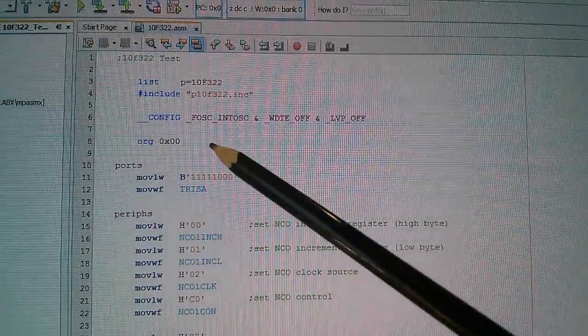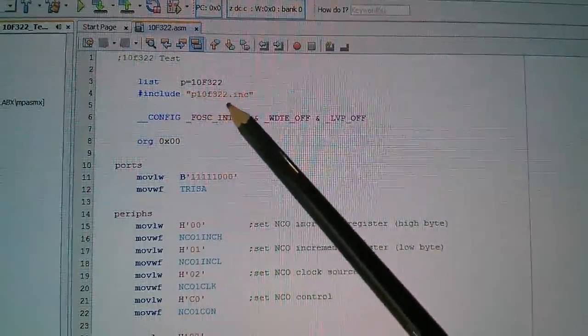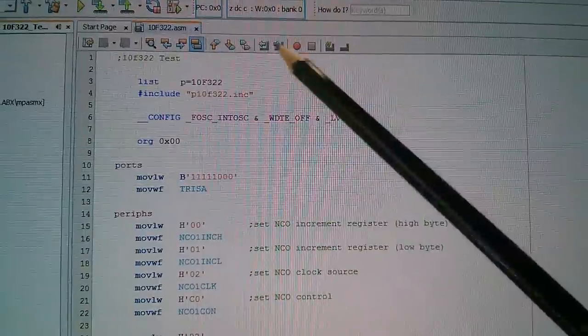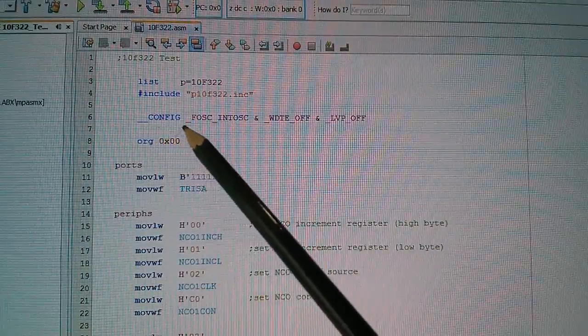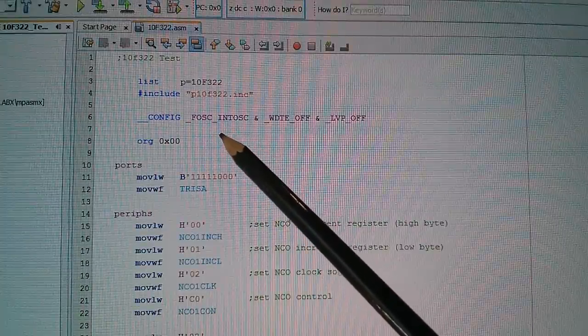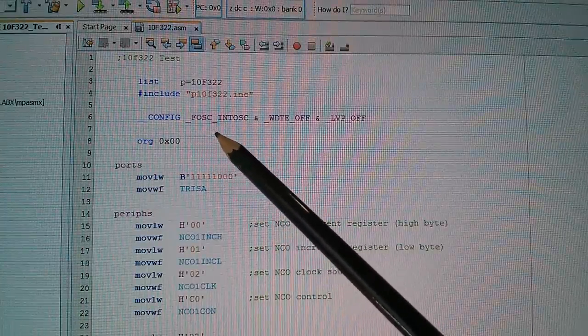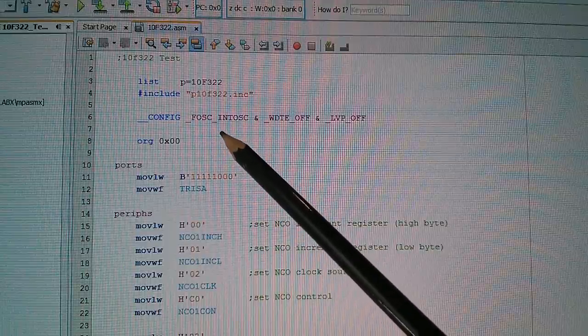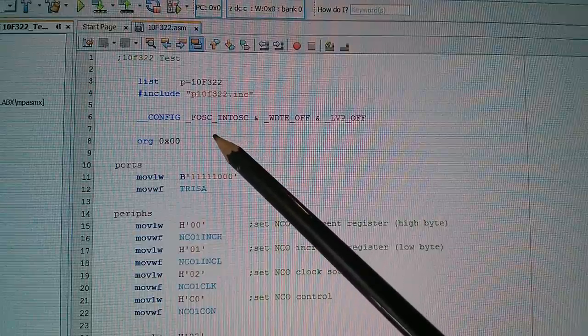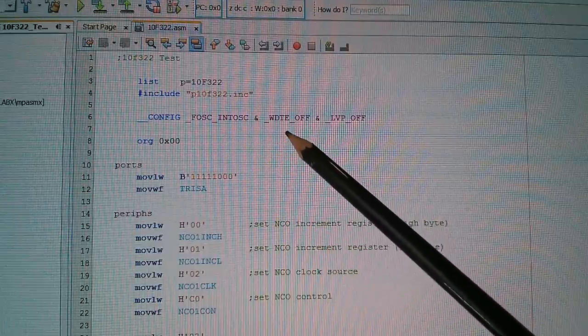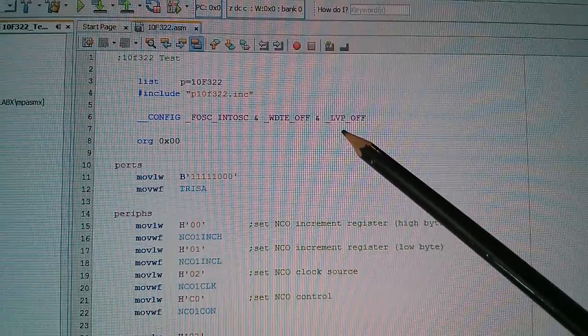So here's my code, which did take quite a while to get to work. Include just brings in a file which has all these register names, so that the assembler will know which registers I'm referring to. Config sets the fuses. The defaults are for an external oscillator, which is a bit silly, so I've had to set the fuse for internal oscillator. That's the 16 MHz oscillator, although it is divided down, and the default for the clock for the CPU is actually 8 MHz. The watchdog timer needs to be turned off, the default is that it's turned on. And I also need to turn off low-voltage programming.